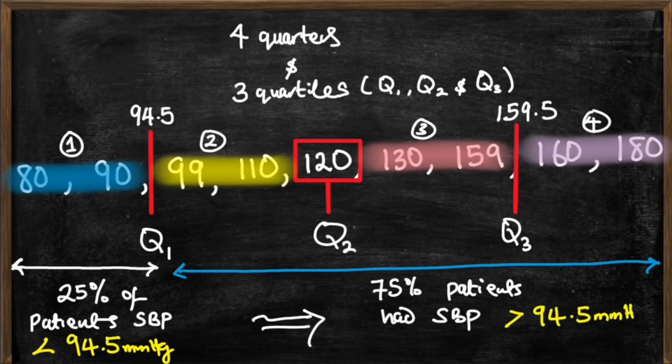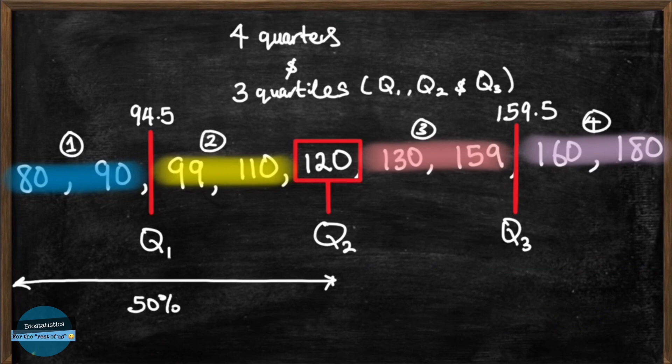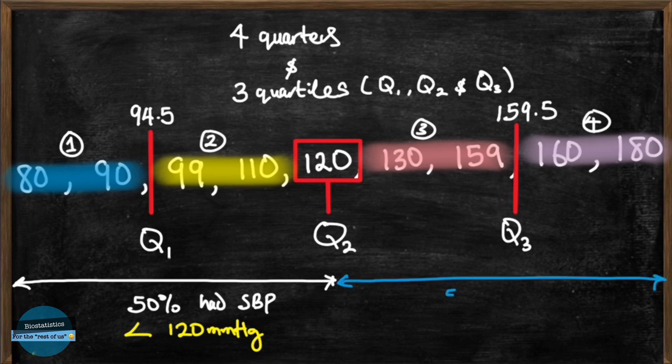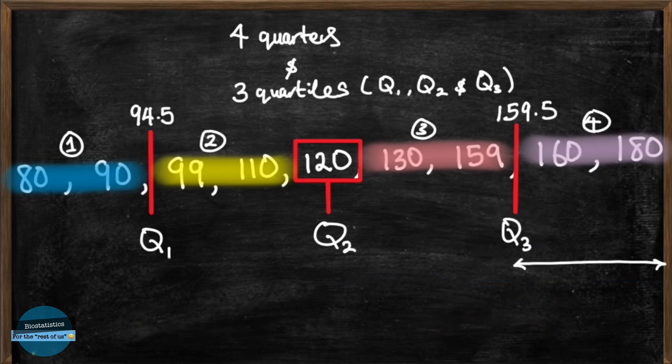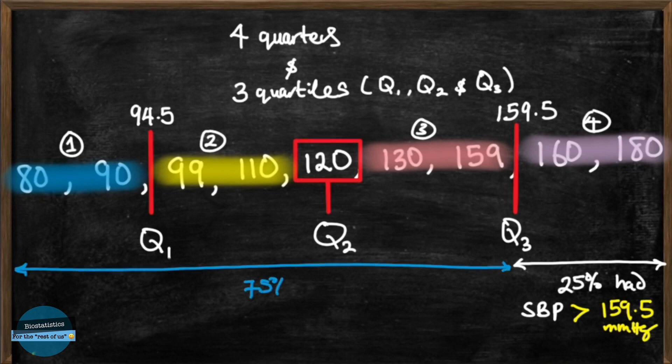Now with a Q2 of 120 millimeters of mercury, that's our median. This simply means that 50% of the patients had a systolic blood pressure lower than 120 millimeters of mercury or 50% had greater than 120 millimeters of mercury. And for Q3 of 159.5 millimeters of mercury, this indicates that 25% of our patients had a systolic blood pressure above 159.5 millimeters of mercury and 75% had a systolic blood pressure below 159.5 millimeters of mercury.